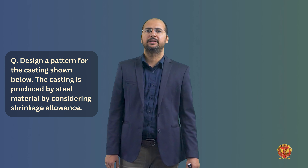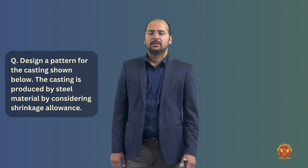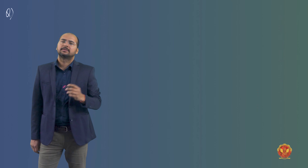Hello students. Next numerical: design a pattern for the casting shown below. The casting is produced by steel material by considering shrinkage allowance. First of all, we have a casting material — the pattern is to be designed, and we need to find the ratio of the volume of the pattern to the casting.